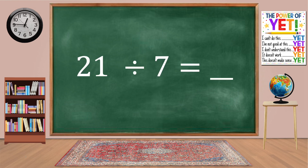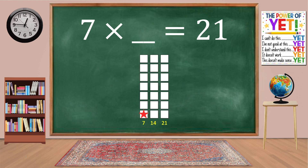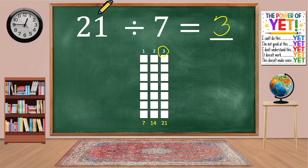Twenty-one divided by seven equals blank. Our related fact is seven times what equals twenty-one? Skip count: 7, 14, 21. We have three columns. Seven times three equals twenty-one. Twenty-one divided by seven equals three.